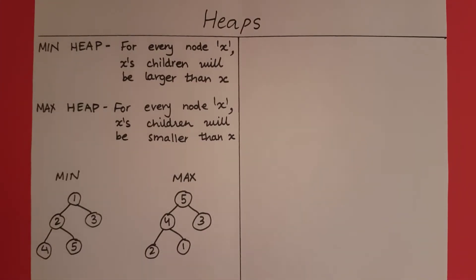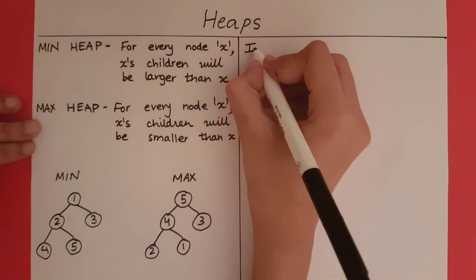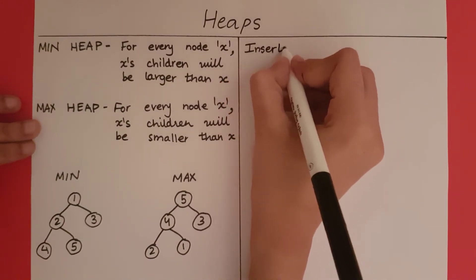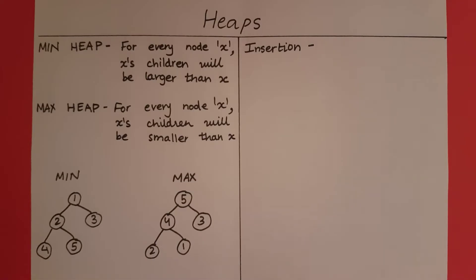This is a basic idea of what a heap is and what the two kinds of heaps are. Now let's look into the two basic operations we will perform using a heap: insertions and deletions. There are two ways we can create a heap — a top-down approach and a bottom-up approach. In this video, we are going to be looking at the top-down approach.